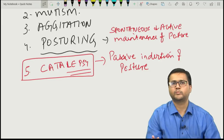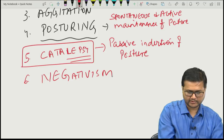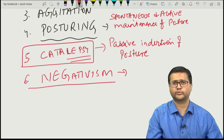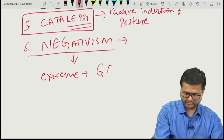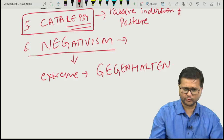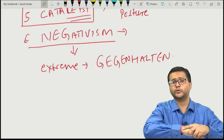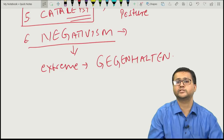There may also be negativism — the person resists whatever they are told or made to do. When it becomes extreme, it is known as Gegenhalten. For example, if the examiner is pulling the patient's hand towards himself but the person resists with even more force than the examiner, that is Gegenhalten.